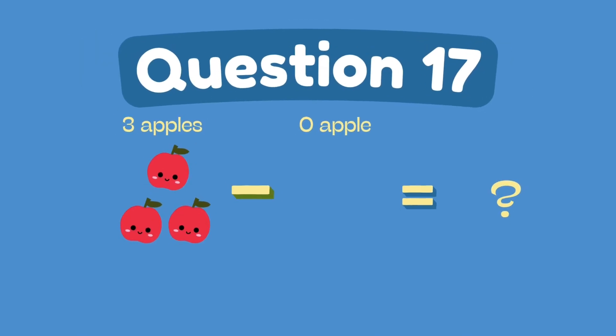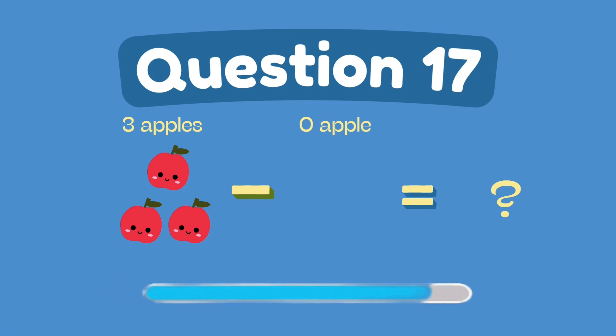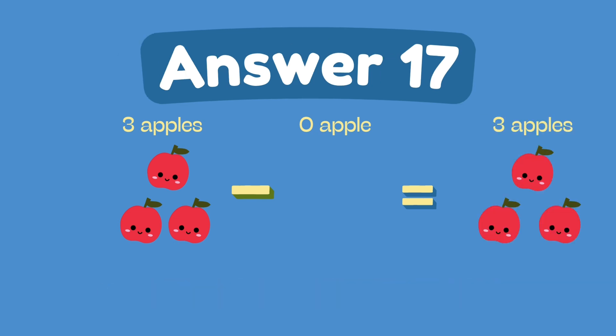What is three minus zero? The answer is three.